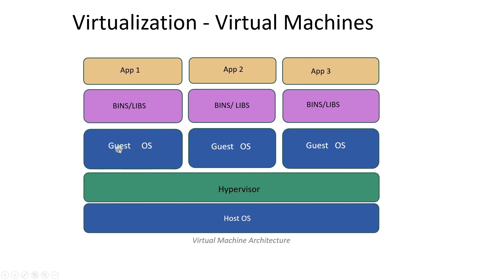Virtualization allowed us to divide a single computer into multiple virtual machines or VMs. On these virtual computers, we can run different applications requiring different frameworks. On VMs, we can install different operating systems. For example, we can run a Linux OS on one VM and run our Python applications like Flask or Streamlit. On the second VM, we can run our .NET applications on Windows. Each VM runs in isolation without impacting each other.